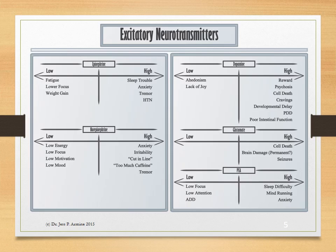Glutamate is a very toxic excitatory neurotransmitter. And when it's very high, you can experience cell death, seizures, or perhaps permanent brain damage. Phenylethylamine, when it is low, you'll have low focus or low attention and symptoms of ADD. Whereas if it's high, you might have sleep difficulty, your mind might be racing, and you might have anxiety.